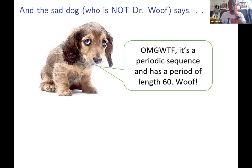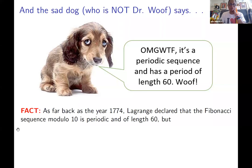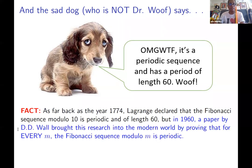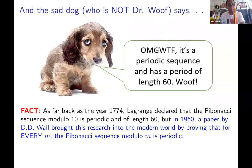This is a classic result going back to 1774. Lagrange — he's on my wall back there — declared that the Fibonacci sequence modulo 10 is periodic and of length 60. But in 1960, a paper by D.D. Wall brought this into the modern world, proving that for every M, the Fibonacci sequence modulo M is periodic. So everything we're going to show you extends to not just mod 10 but any mod, and that begins our little adventure.